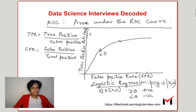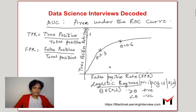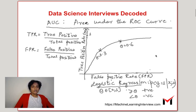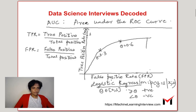Similarly, when I choose a different theta, let's say theta equals 0.6, I might get a different value of TPR and FPR, which leads to a different point. When I keep varying the value of theta and join all these points, I get the ROC curve. The area under that curve is the AUC metric.